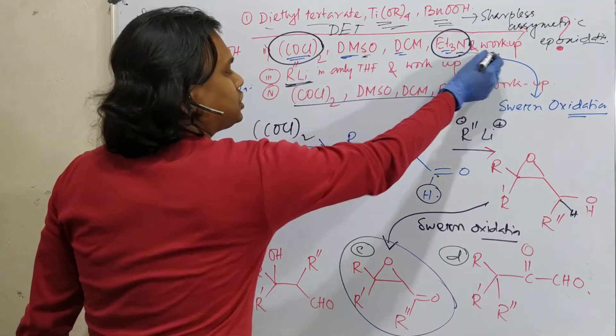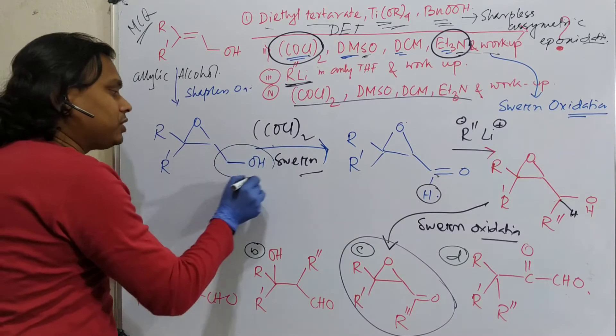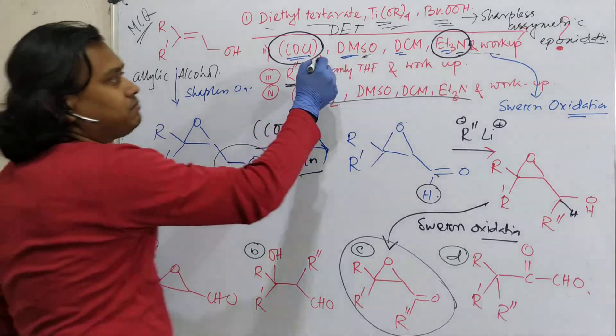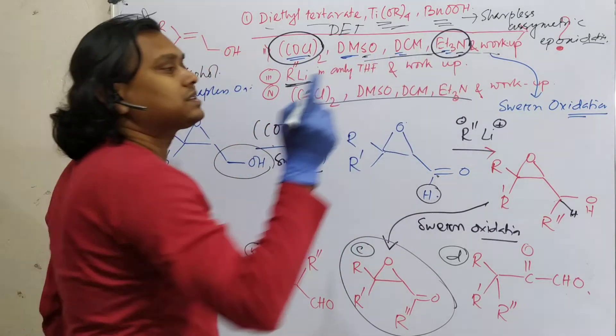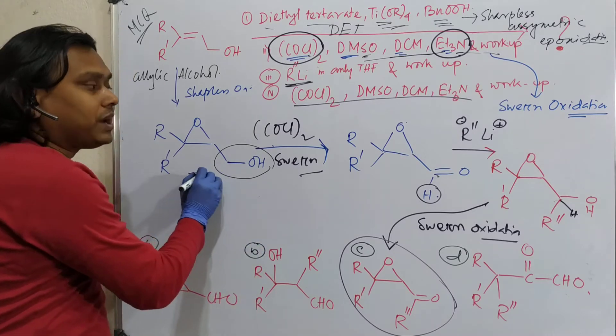Second, it's a Swern oxidation. So Swern oxidation will oxidize alcohol to corresponding carbonyl. By the way, question, will epoxides survive? Obviously survive, because medium is slightly alkaline, or you can say neutral. So it will not open up.